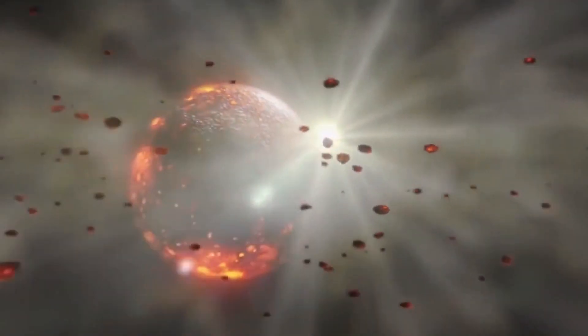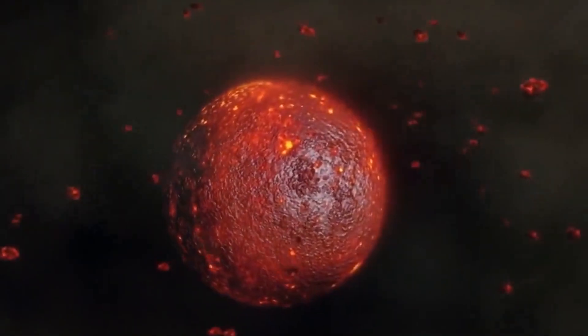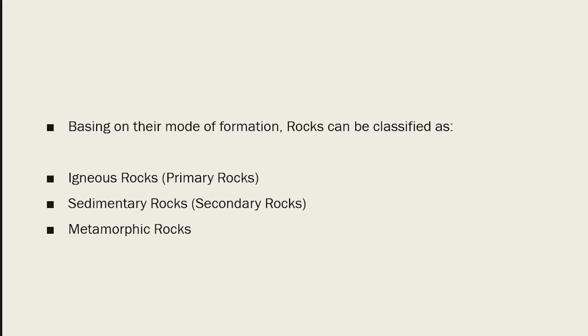A rock is a solid mass of geological materials made of minerals, metals, fossils, granite, sand, salt, and more. Rocks differ from each other in color, texture, and origin. Based on their mode of formation, rocks can be classified as igneous rocks, sedimentary rocks, and metamorphic rocks.